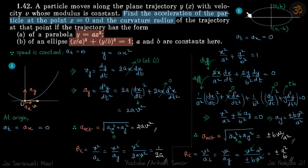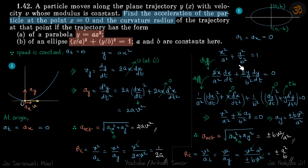Now in the second part we have an ellipse. The same logic applies: velocity is parallel to at and since velocity does not change, at is 0. So at equal to ax equal to 0 by the same reasoning. Now we need to find the acceleration. We'll differentiate the ellipse equation with respect to time — once gives one expression, twice gives the second derivative.